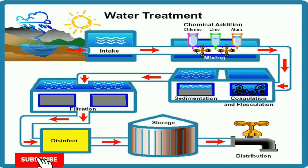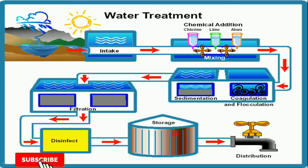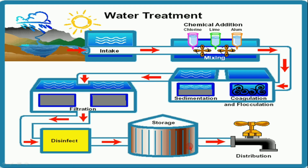Chlorine compounds like chloramine and bleaching water are also used. By sending these three types of chlorine compounds into the water, we can kill the microorganisms.